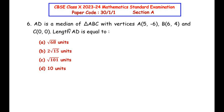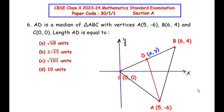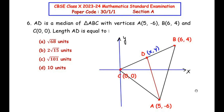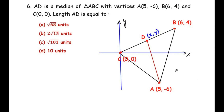To understand this question, let me draw a rough figure showing all these vertices. A(5, -6) will be somewhere below the x-axis, B(6, 4) will be above, and C(0, 0) will be at the origin.